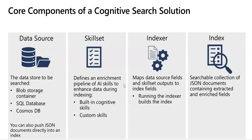Most search solutions start with a data source containing the data you want to search. Azure Cognitive Search supports multiple types of data sources including unstructured files in Azure Blob Storage Containers, tables in Azure SQL Database, and documents in Cosmos DB. Azure Cognitive Search can pull data from all these data sources for indexing. Alternatively, applications can push data directly into an index without pulling it from an existing data source.